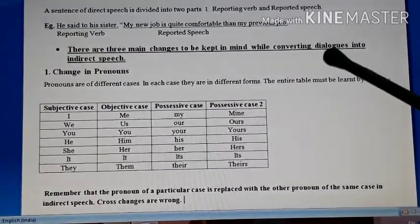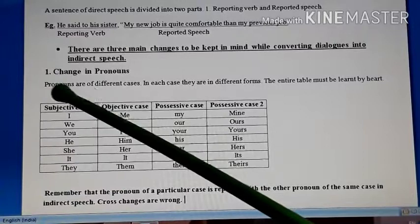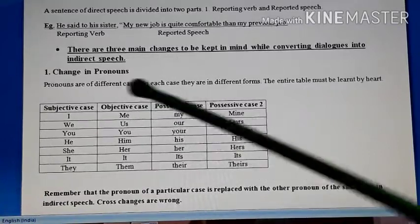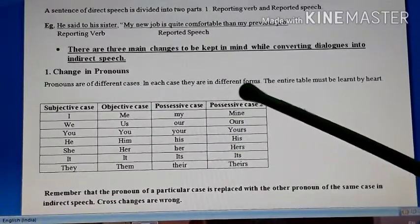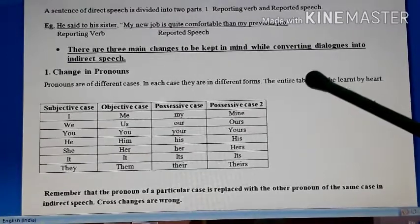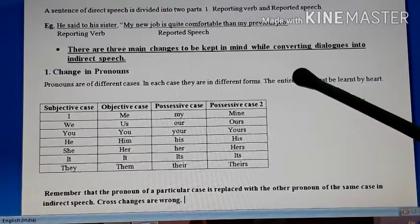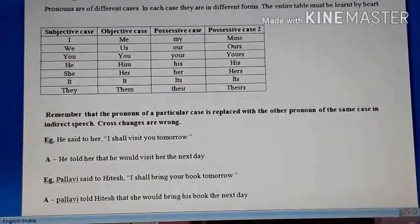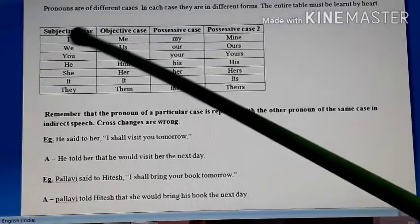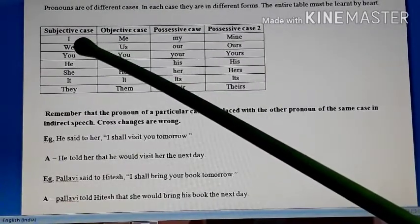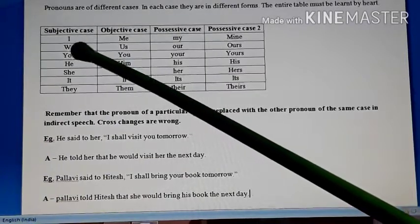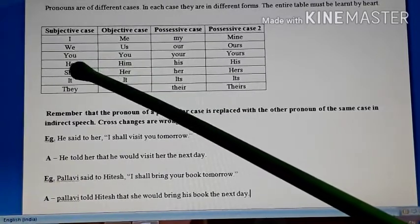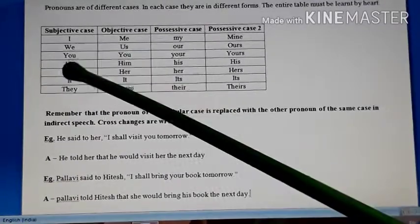The first change is in pronouns. Pronouns are of different cases, and in each case they are in different forms. The entire table must be learnt by heart. First is subjective case, where the pronouns are written at the place of subject: I, we, you, he, she, it, they.